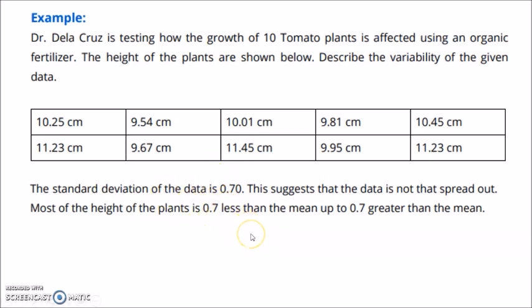The mean is 10 centimeter and the standard deviation is 0.7. Meaning to say, the interval, most of the scores are just 0.7 less than 10. So that is like 9.3 and then up to 0.7 greater than the mean. So pretty much the height of the plants are very close to the mean height of the plants.